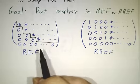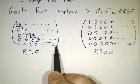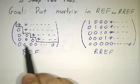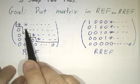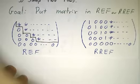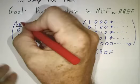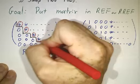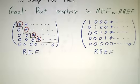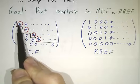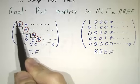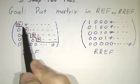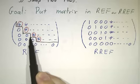Row echelon form means that some of the rows might be nothing but zeros, and if so, they must be at the very bottom of the matrix. Every other row has a first non-zero entry called a pivot. Row echelon form means that each pivot is to the right of the previous pivot, giving you a staircase — echelon is basically French for stairs — going to the right with each successive pivot.